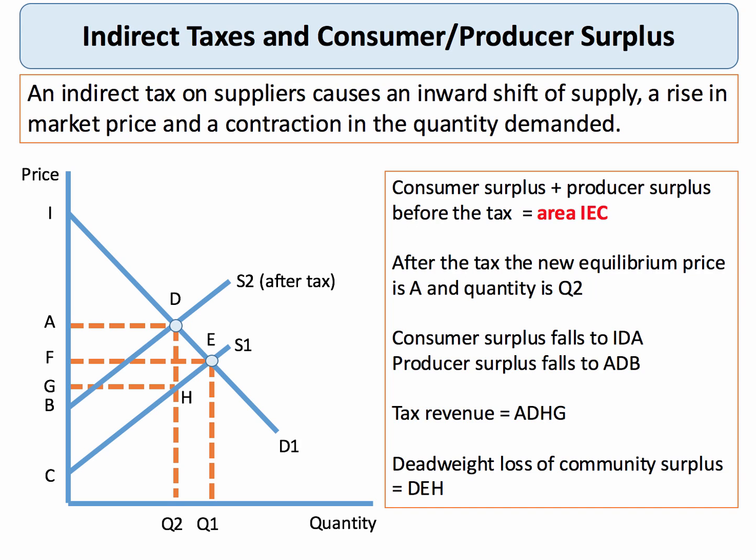The tax revenue — we're told — is $100 million. That's the area ADHG. But there is also a deadweight loss of community surplus, shown by the triangle to the right of quantity Q2, equal to area DEH. That deadweight loss is the key to the question. So the tax raises $100 million, meaning some of the consumer and producer surplus has gone to the government. But actually, the combined loss of welfare is more than $100 million, as shown by that deadweight loss triangle.